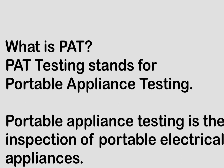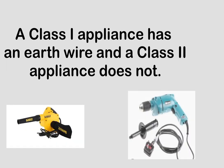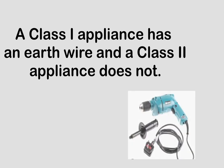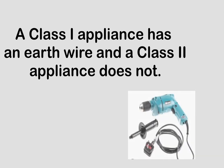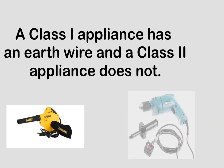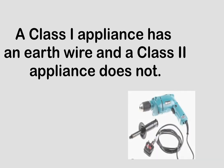PAT test can be done on Class 1 and Class 2 equipment. The difference between Class 1 and Class 2 equipment is that Class 1 appliances have an earth wire and Class 2 appliances do not. You can check here — the left side is a Class 2 equipment because you can see there are only two pins with no earth connection, as the body is made of plastic. The right side equipment is made of metal, making it a Class 1 equipment.